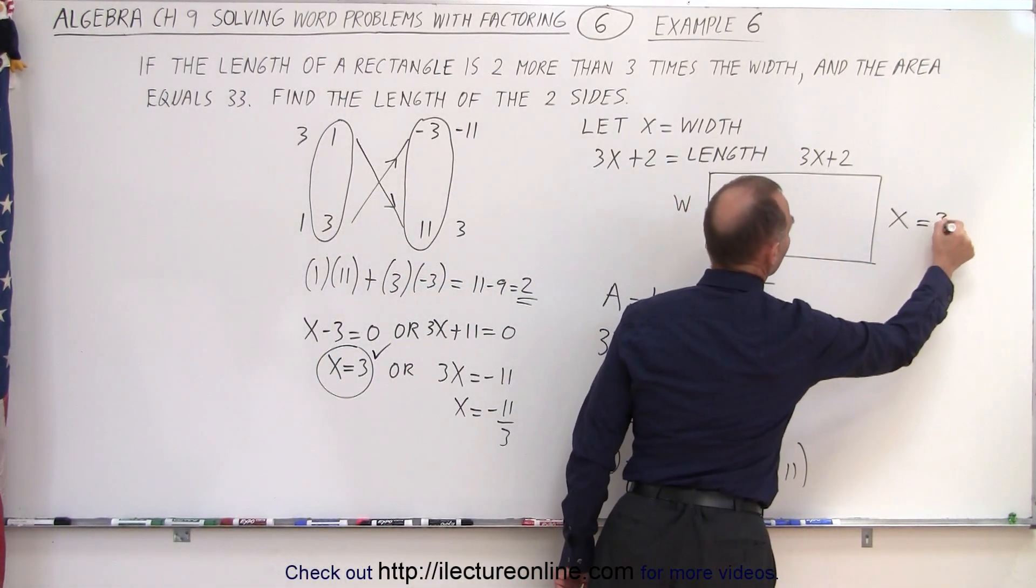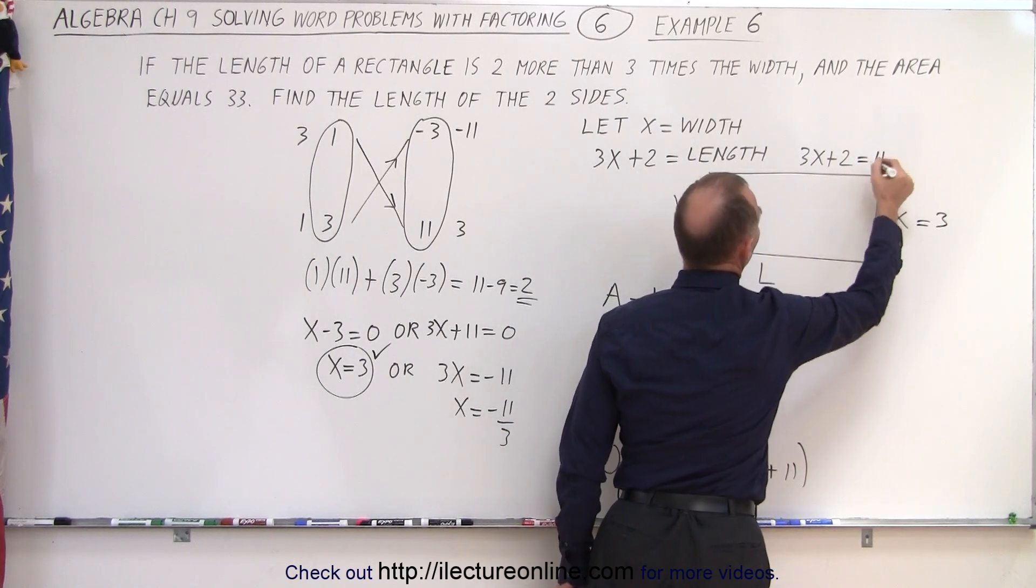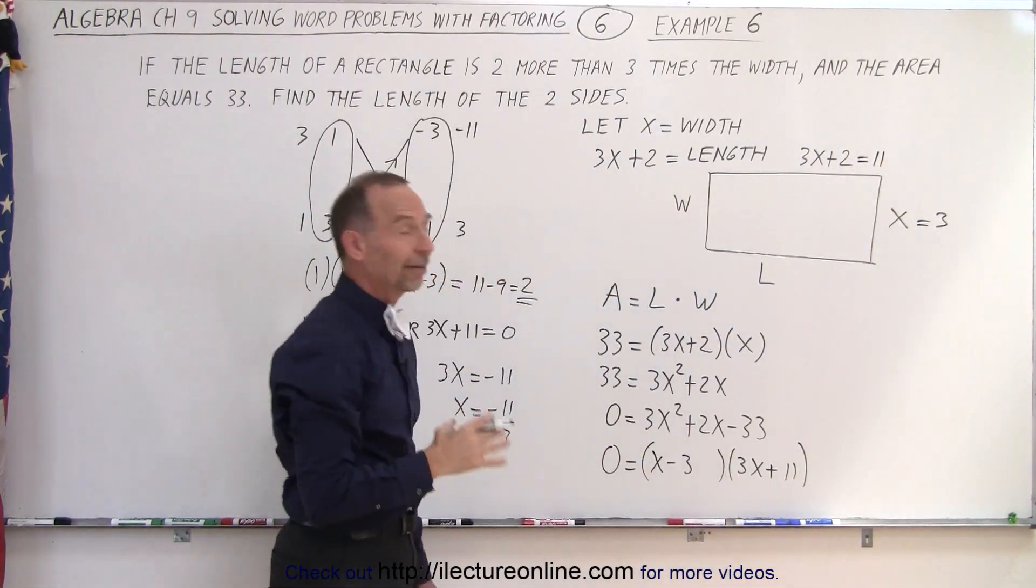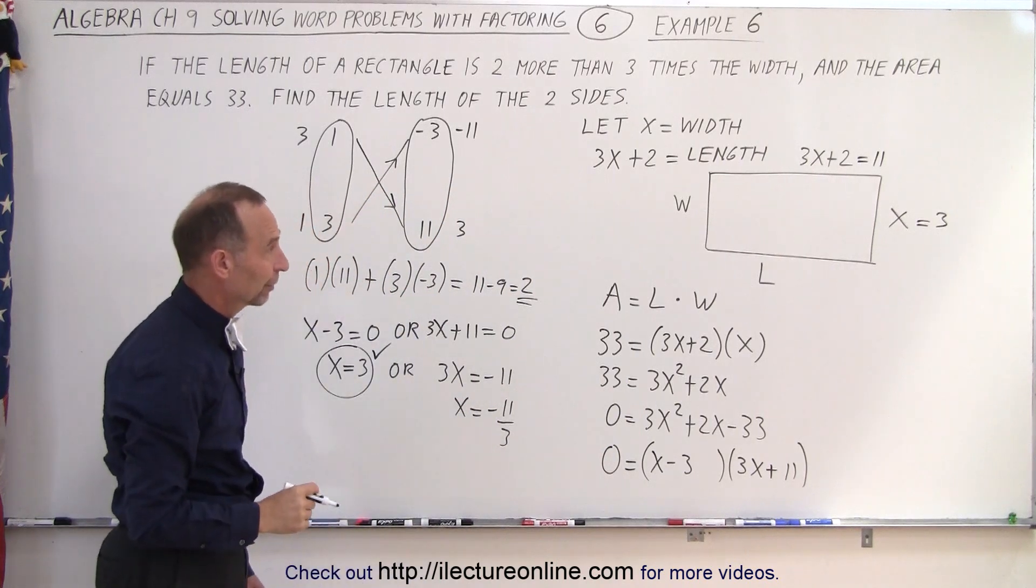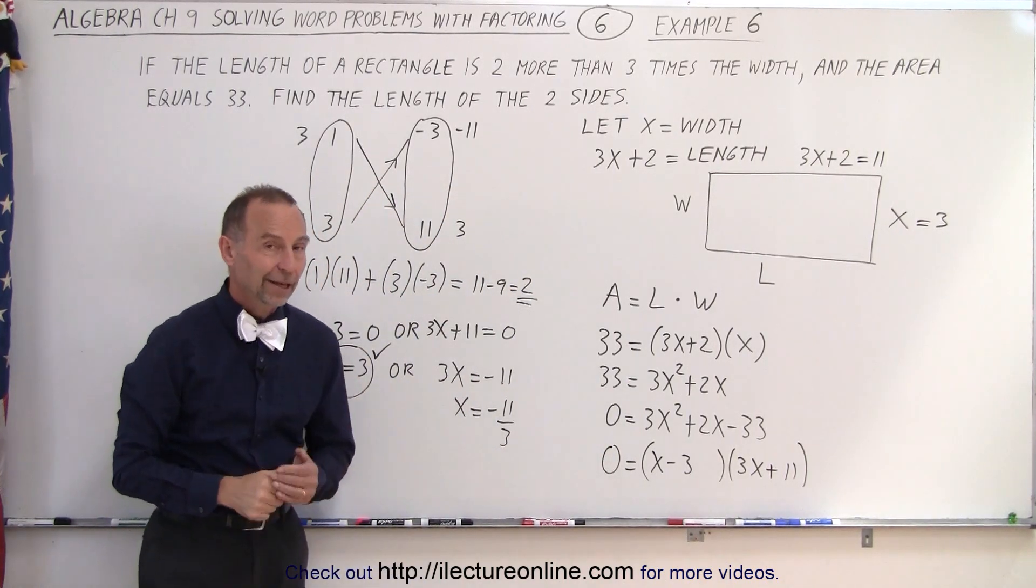Which means that the width is equal to three, and then three times three, which is nine plus two, which is eleven, is equal to the length. And sure enough, eleven times three does indeed give us an area of thirty-three. So, that is the correct combination, and that is how it's done.